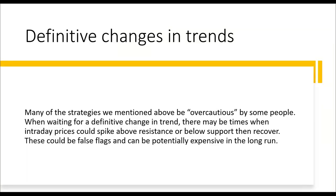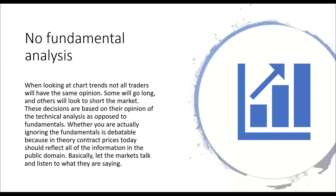Unfortunately, traders using price action trading are often caught out by significant shifts in the market — prices do not return to their preferred trading levels. For those lacking discipline, they can end up chasing price higher and higher. Meanwhile, for those who are able to remain focused on the technical situation, opportunities will emerge. While waiting for a definitive change in trend, there will be times when intraday prices could spike above resistance or below support — this is why we have multiple trading strategies. You can be a price action trader as well as an oscillator trader and apply different strategies when the market gives you clues.